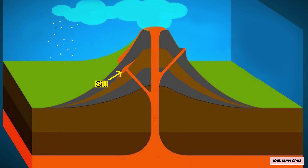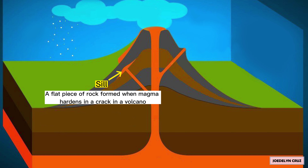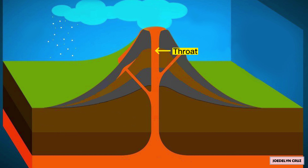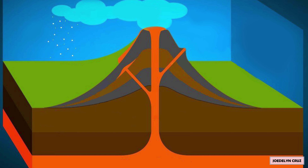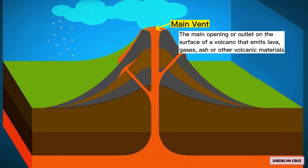A sill is a flat piece of rock formed when magma hardens in a crack in a volcano. The throat is the entrance of a volcano — the part of the conduit that ejects lava and volcanic ash. The main vent is the main opening or outlet on the surface of a volcano that emits lava, gases, ash, or other volcanic materials.